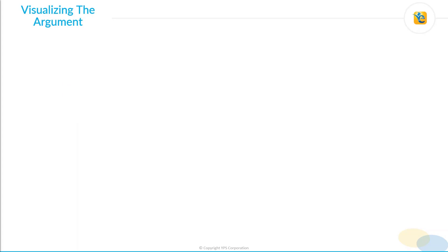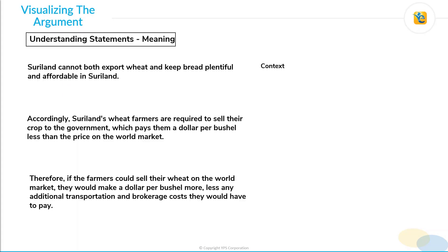Let's start by visualizing the argument. The first statement provides context. The second statement provides this information: if the world market price per bushel of wheat is X dollars, then Suriland government's price per bushel will be X minus one dollar. This is what we get to know from the second statement.